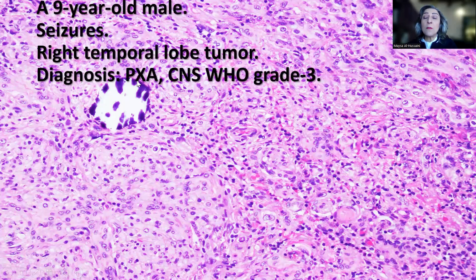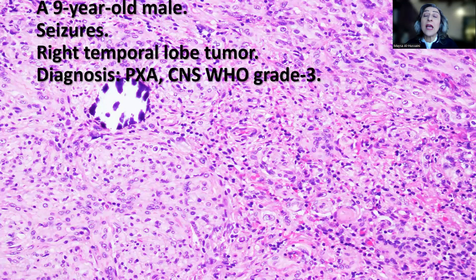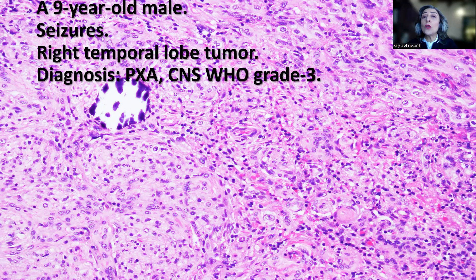The final diagnosis in this case is pleomorphic xanthoastrocytoma, CNS WHO grade 3. Remember that PXA can be grade 2 or 3 depending primarily on the presence of mitoses; other supportive features like necrosis and microvascular proliferation can be present, but what you really need to find is the increased mitotic activity. PXA usually presents with seizures, typically in the temporal lobe, in a superficial location with a cyst and mural nodule. To separate it from glioblastoma, perform P53, and if rhabdoid morphology is present, perform INI-1 to exclude ATRT.